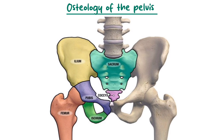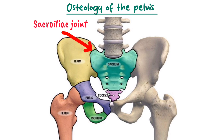Each hip bone is a large, irregularly shaped bone formed by the fusion of three bones: the ilium, the ischium, and the pubis. The first landmark is the sacroiliac joint, which is the articulation between the sacrum and the ilium. It is a synovial plane joint with very limited movement.